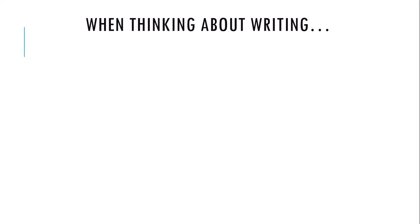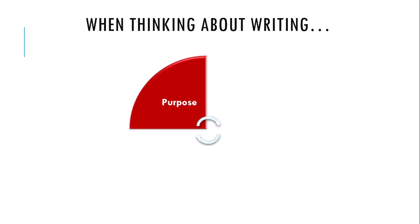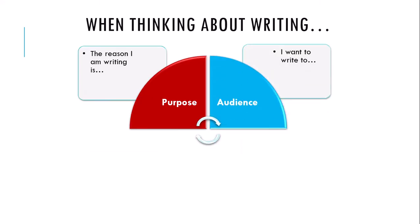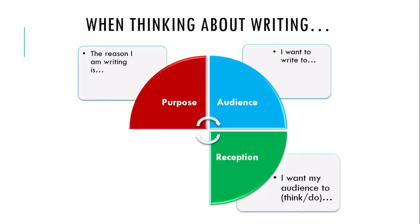When an author is thinking about writing, they think about purpose — the reason why they are writing. They think about audience, the specific intended person or group of people that they want to write to. They consider reception: how will the audience think, what they want the audience to do or understand, and will the audience accept what they have to say? Will there be barriers where the audience won't want to hear their message?